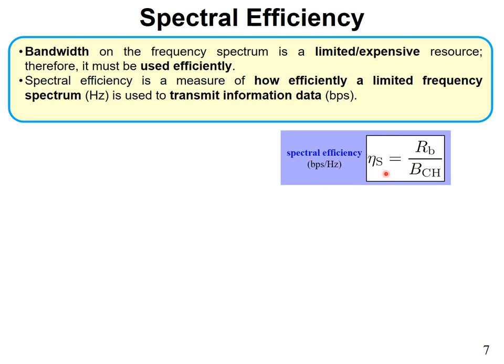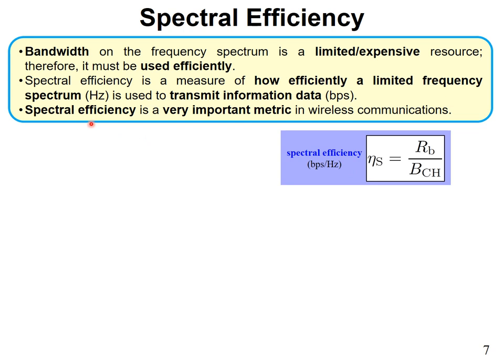Spectral efficiency is defined as: η_S = R / B_ch, where R is the data rate in bits per second and B_ch is the channel bandwidth in Hertz. The units are bits per second per Hertz (bps/Hz). This metric tells you how efficiently you're using the channel. The bigger the spectral efficiency, the better — the smaller the value, the less efficient your system is. Since spectrum is limited and expensive, you want to maximize efficiency.